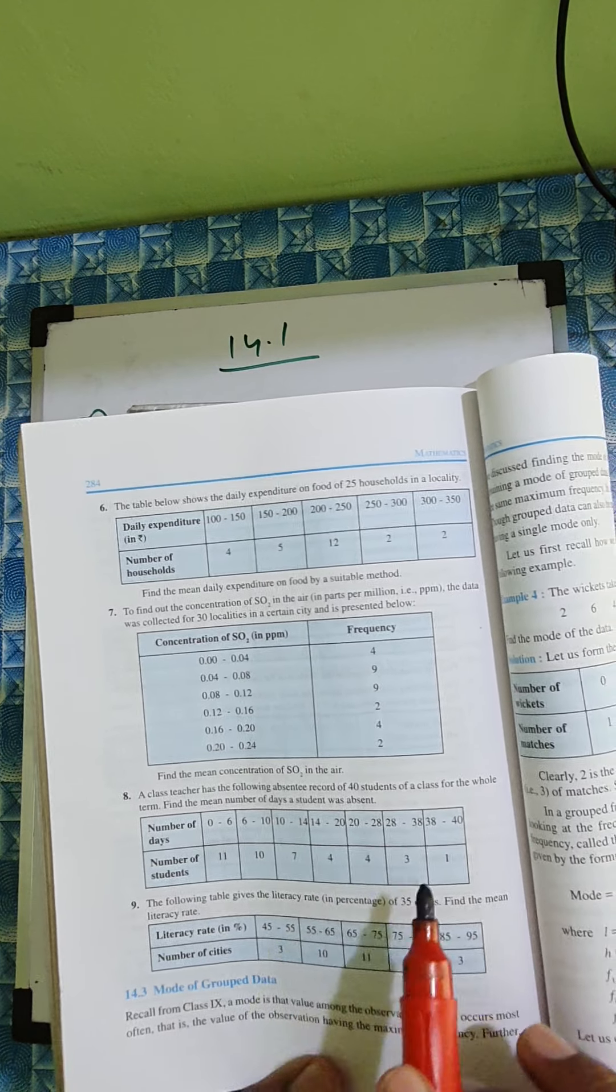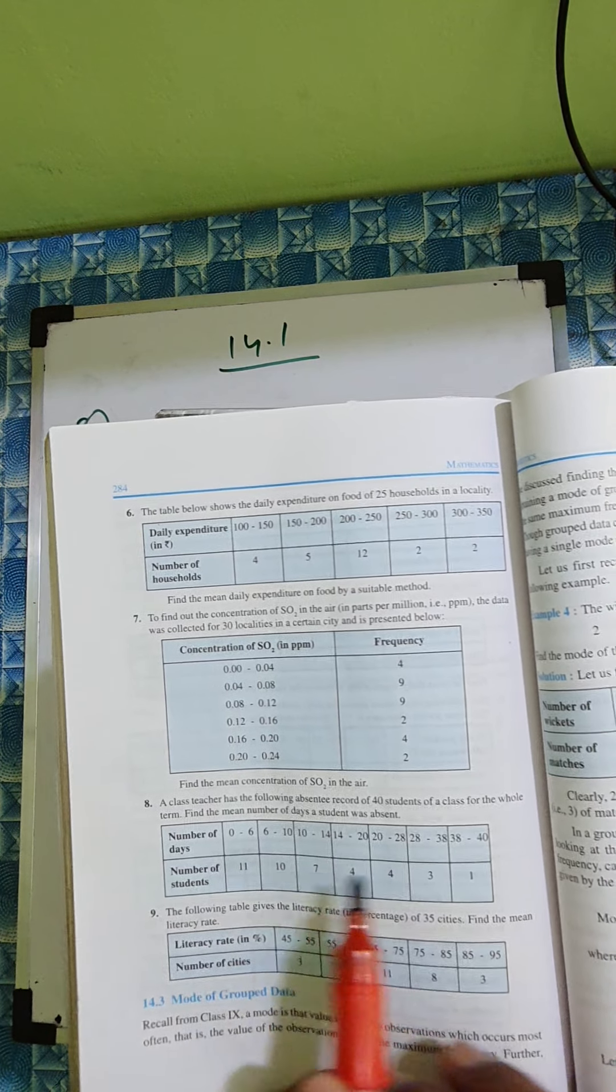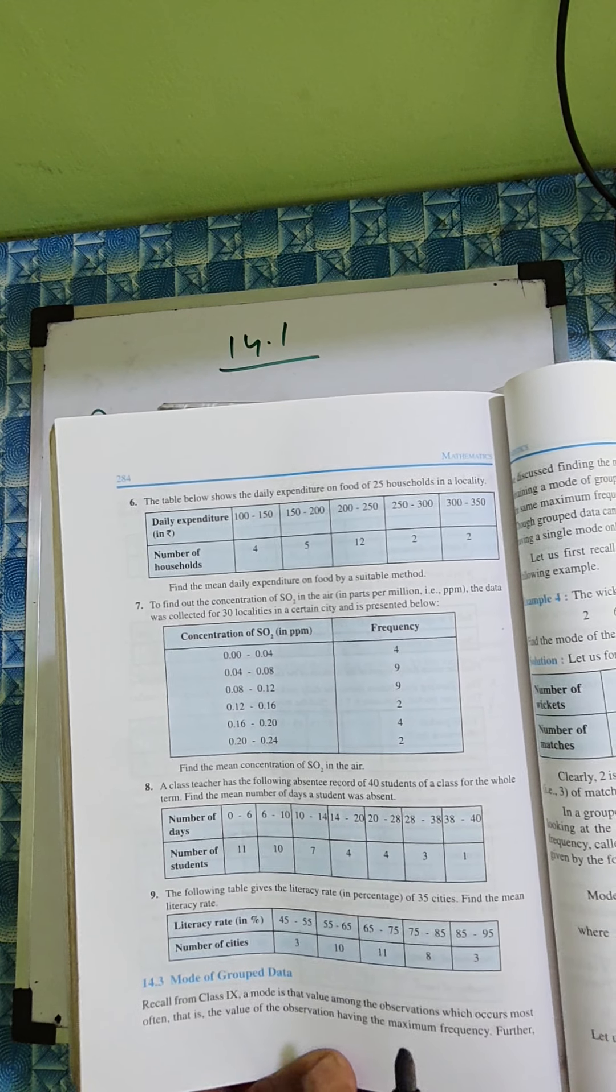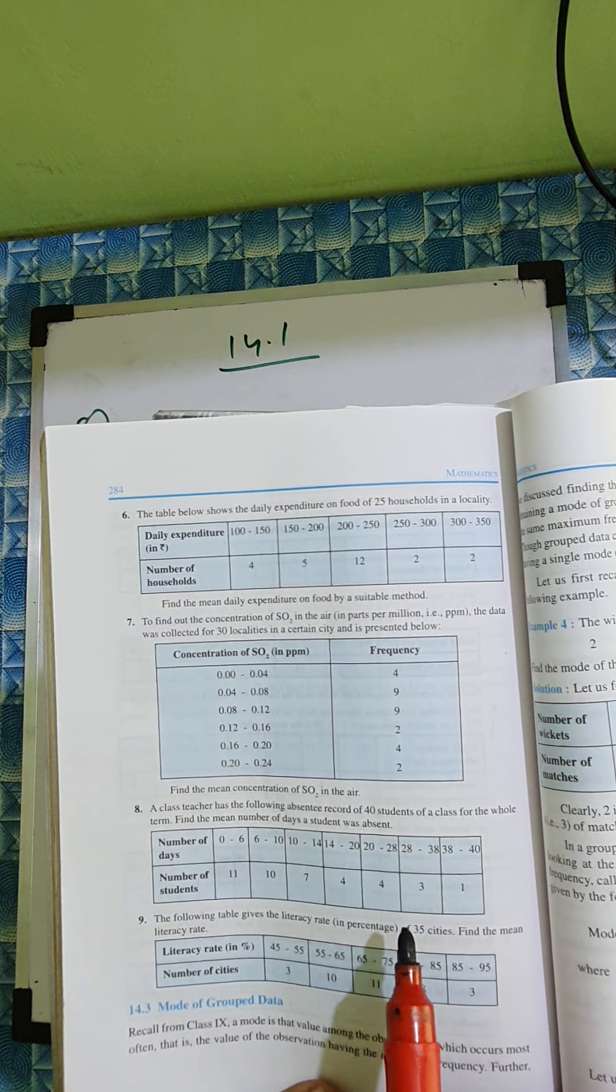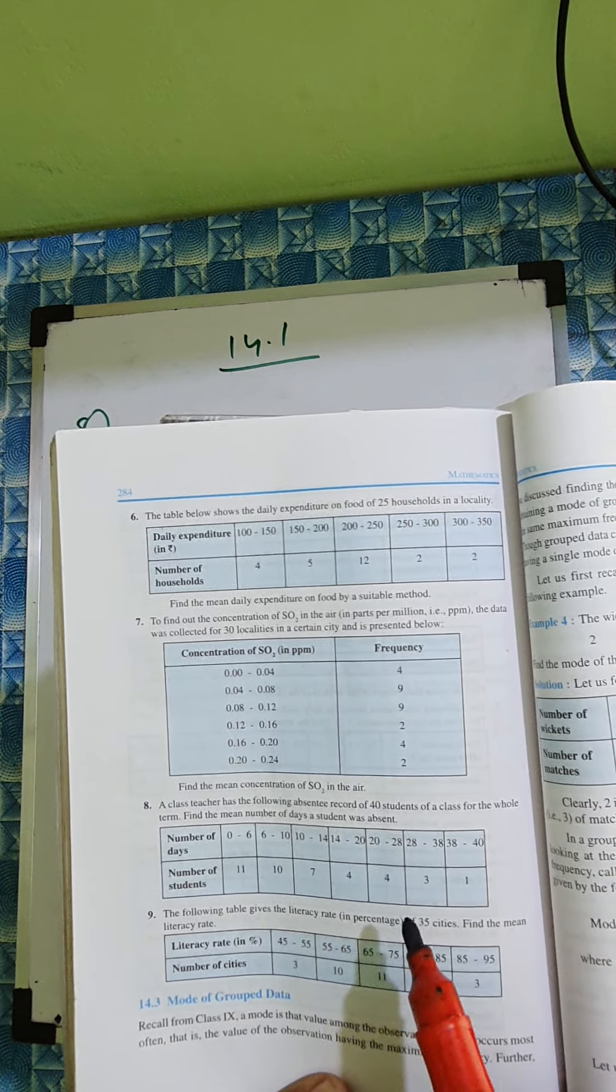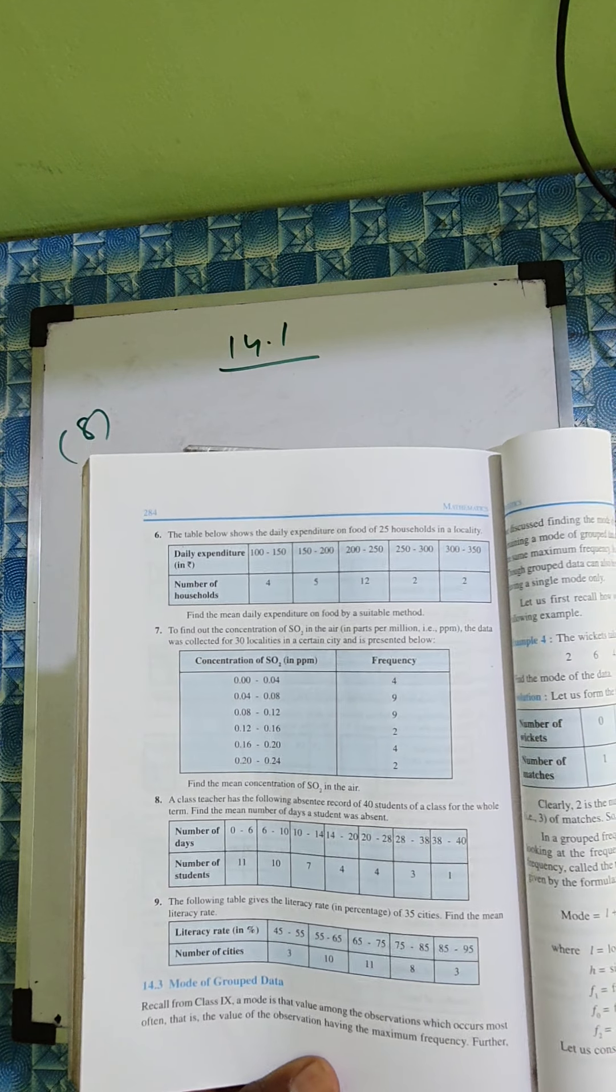So we can use step deviation method. Step deviation means the class intervals should be equal. In this method, we can do direct method or assume method. I'll just do assume method here.